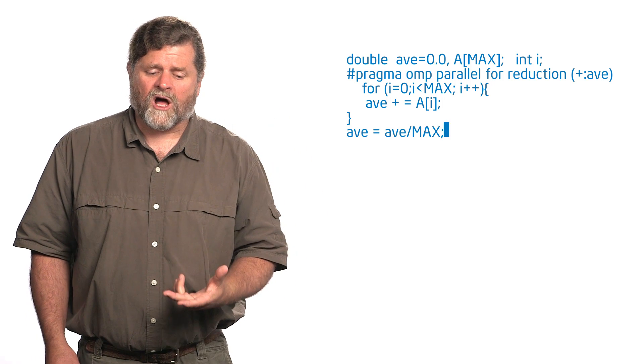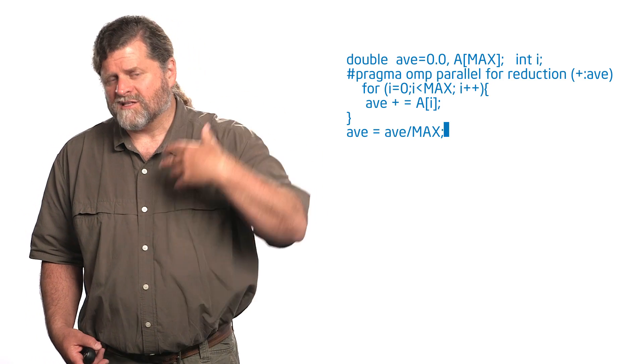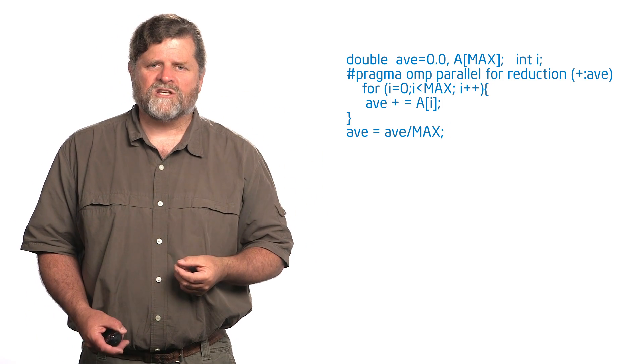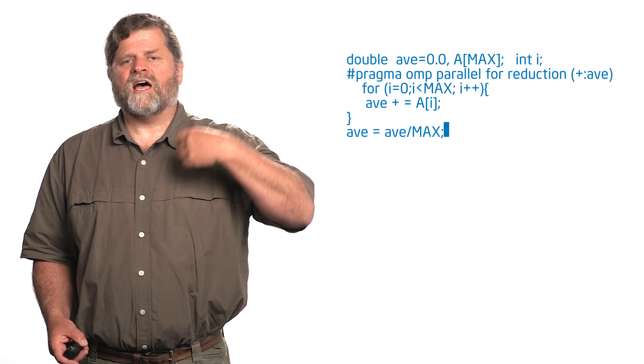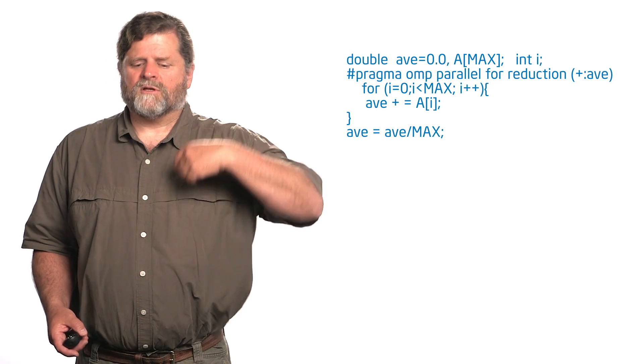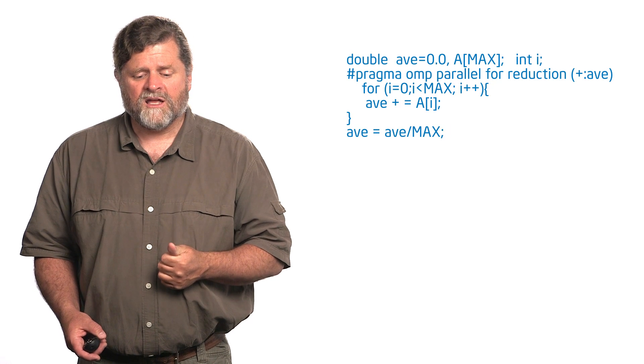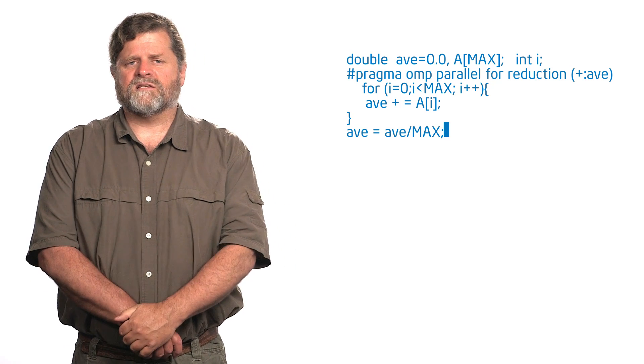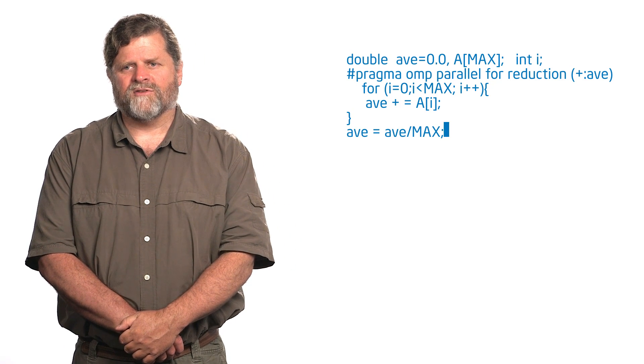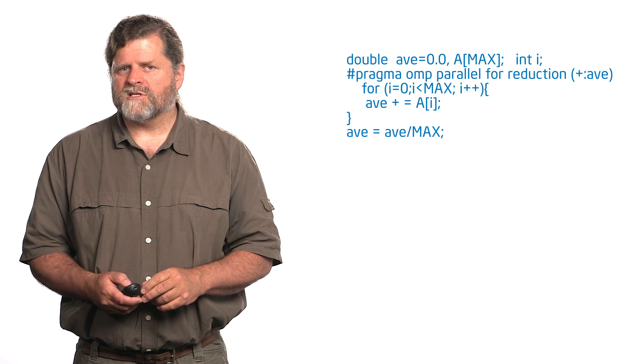So now each thread gets its local copy of av. Each thread does its local summation of the average. And then when it's done, it combines them. It combines it with the global copy of av, which I set to zero fortunately. So then at the end, it then does the division by max to give me the final average. So that's all there is to using a reduction.